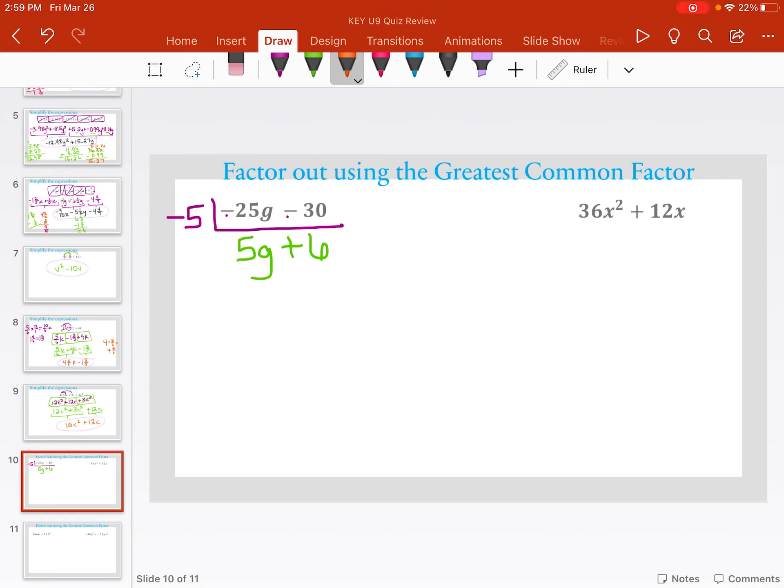And then I look again, there's no other numbers that come out, there's no variables that come out, so what's left over down here at the bottom, the 5g plus 6, that's what goes inside my parentheses. Everything I multiplied or divided out here on the side is what gets multiplied here at the end, so negative 5 on the outside.